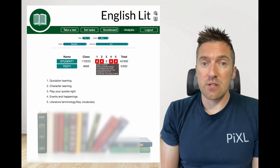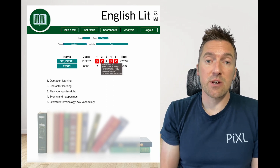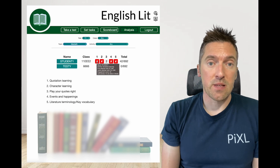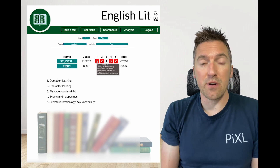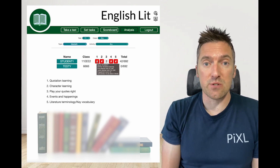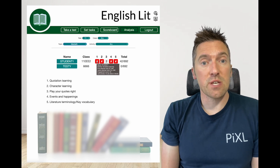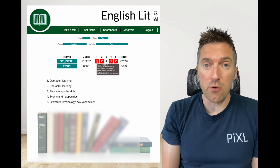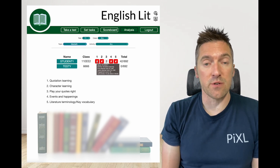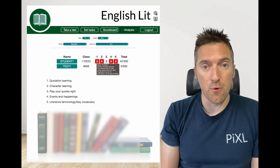The first box representing the quotation learning task is currently red. This is due to student 1 not having answered more than 50% of the questions correctly. A result will not turn amber until 50% or more of the questions are answered correctly, and will only turn green if they get 75% or more.